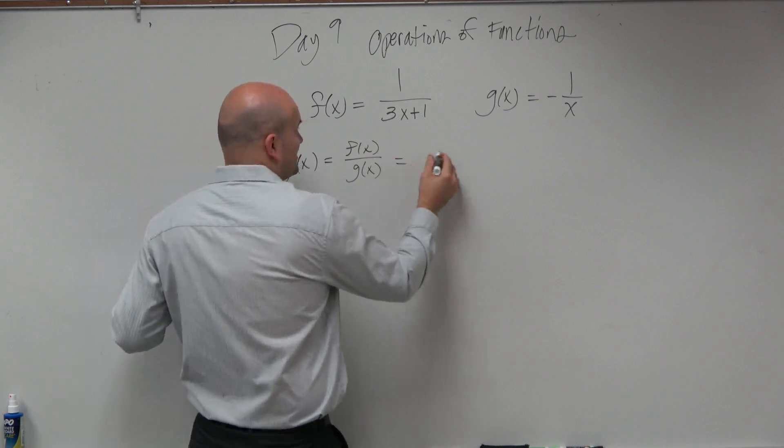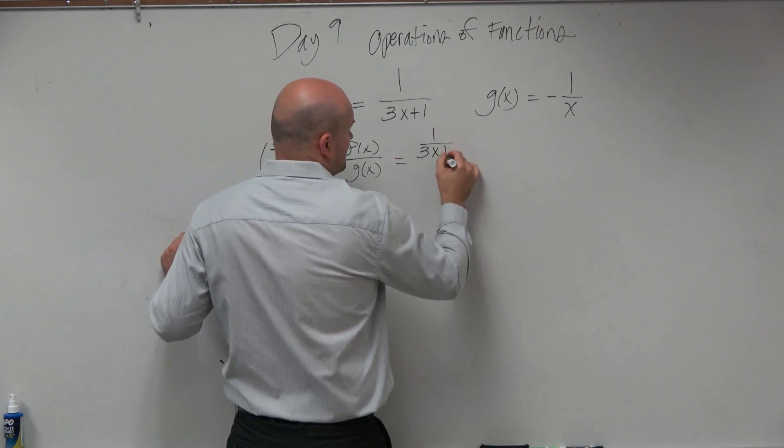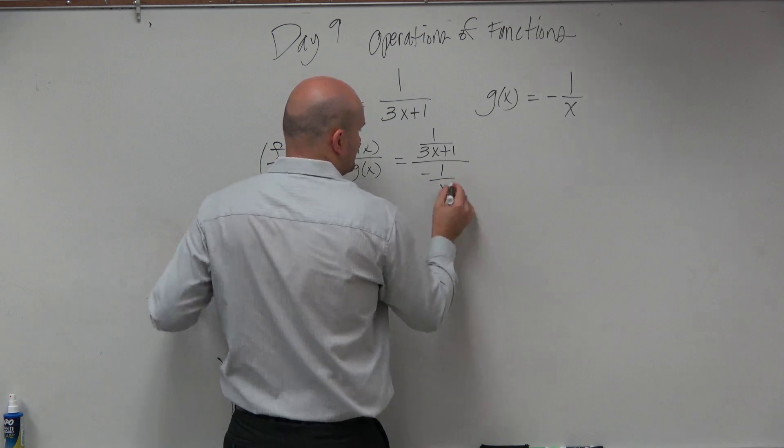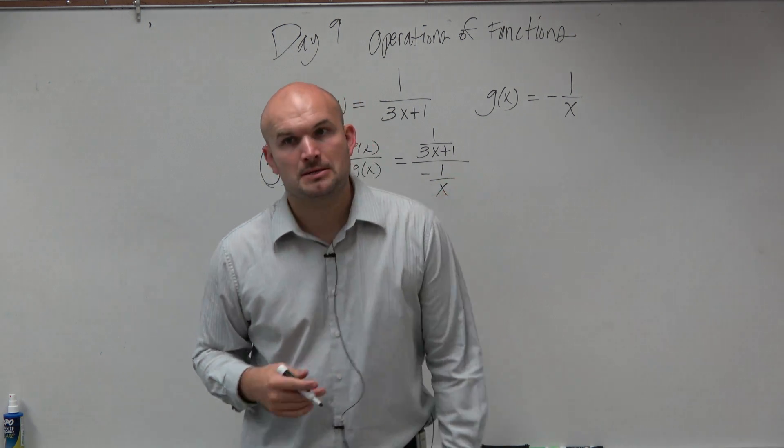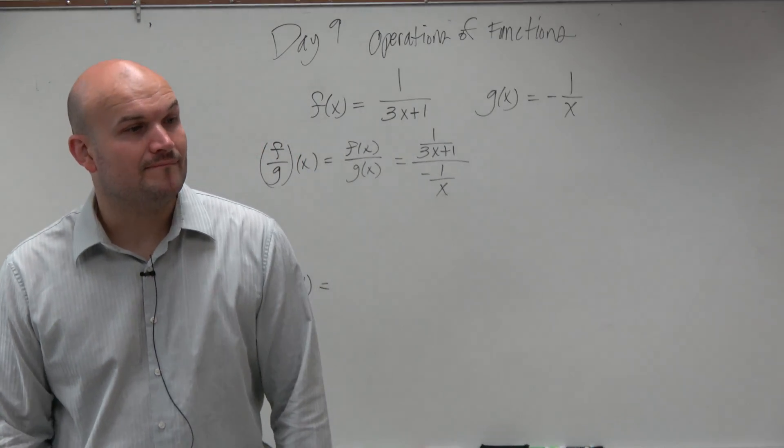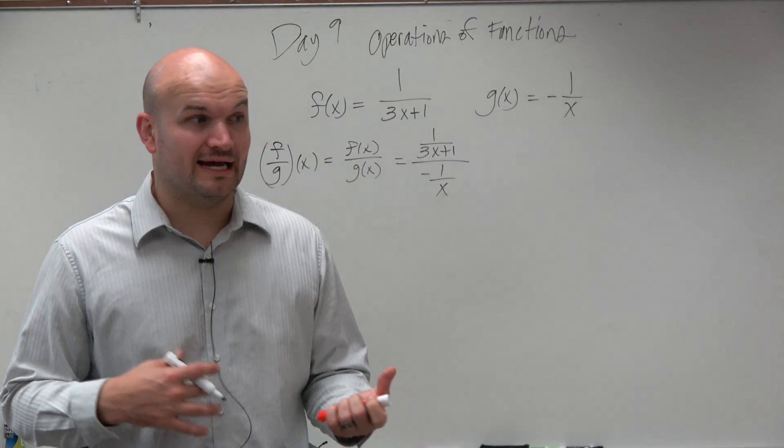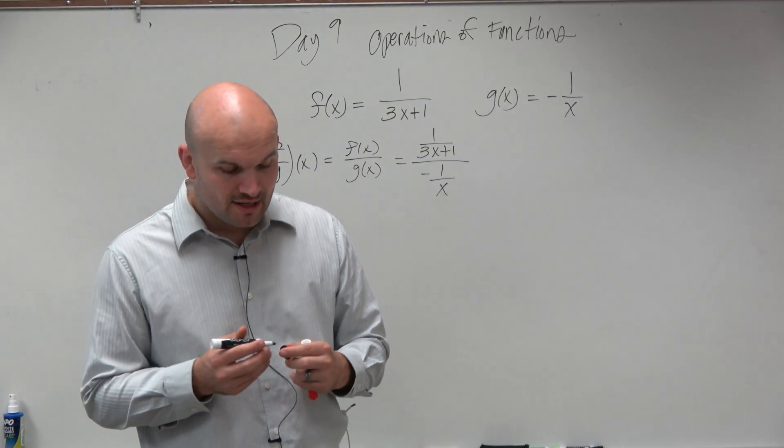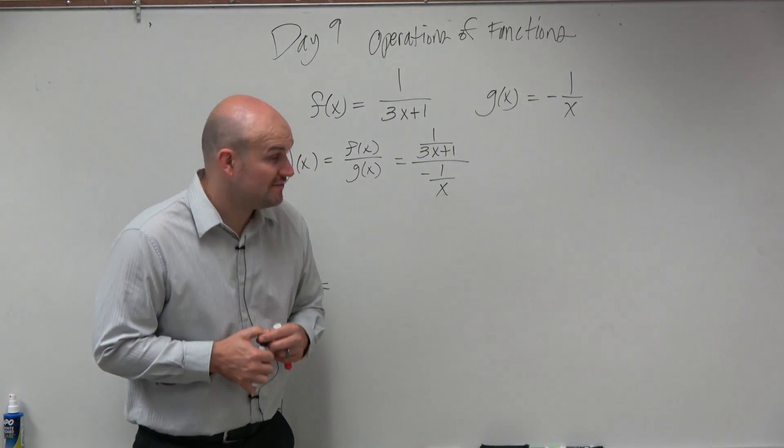So to do a problem like this, we're simply just going to take the f of x function and then divide it by the g of x function. It's about as simple as we get. However, we have a fraction divided by a fraction. And typically, we don't want to have fractions in the numerator and the denominator. So what we need to do is we need to get rid of a fraction.